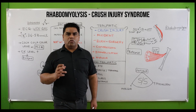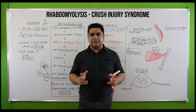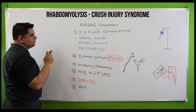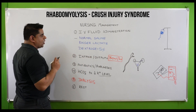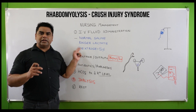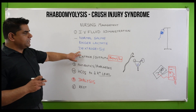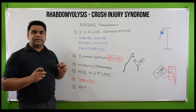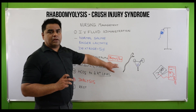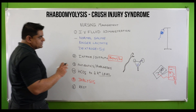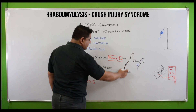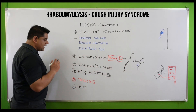Now for nursing management: since there is a lot of fluid and electrolyte imbalance, IV fluid administration is the top priority. We will administer normal saline, Ringer's lactate, and dextrose 5% to maintain blood glucose and ATP levels, and to neutralize the increased potassium. The nurse will monitor intake and output, which must be at least 30 ml per hour, and check for Foley catheter infection, since sepsis can be a cause of rhabdomyolysis.